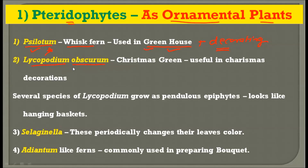The second ornamental species is Lycopodium obscurum, popularly known as Christmas green. It is useful in Christmas decorations. Other species of Lycopodium grow as pendulous epiphytes, so they look like hanging baskets, adding decorations and looking like natural ecological decorations.